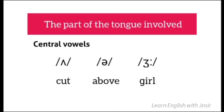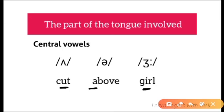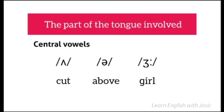The examples of central vowels in English are: A as in 'cut', the schwa sound as in 'above', and A as in 'girl'. These are the central vowels in English. So these are the three classifications of vowels based on the part of the tongue involved: front vowels, back vowels, and central vowels.